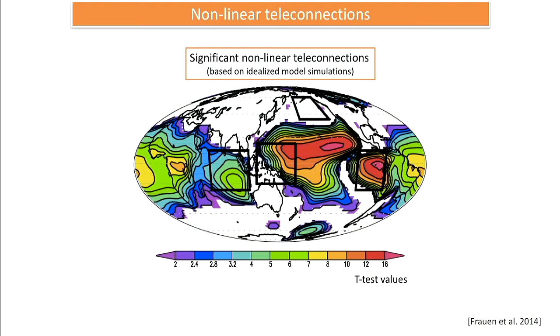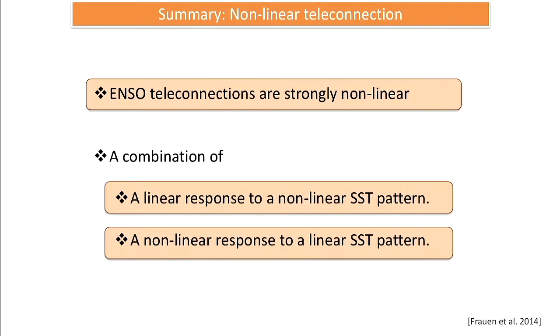The t-test values for linearity show that most of the tropics are colored, indicating significant nonlinear response. There are different response curve shapes in different zones, but basically all of the tropics respond nonlinearly to ENSO teleconnections. Summary: ENSO teleconnections are strongly nonlinear due to two combined factors — a linear atmospheric response to a nonlinear SST pattern, plus a nonlinear atmospheric response even to a linear SST pattern.